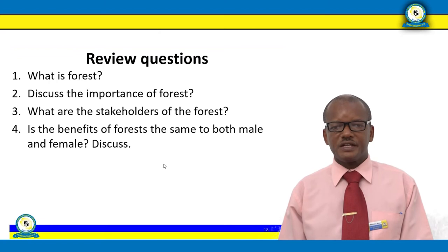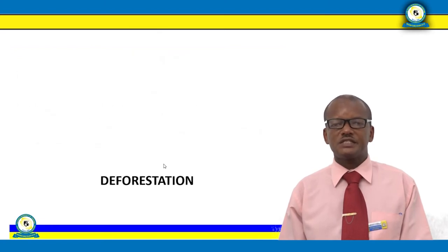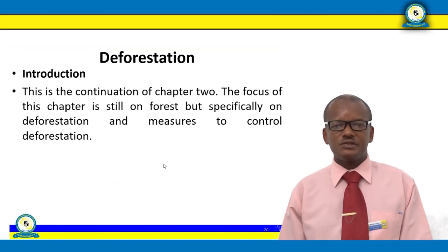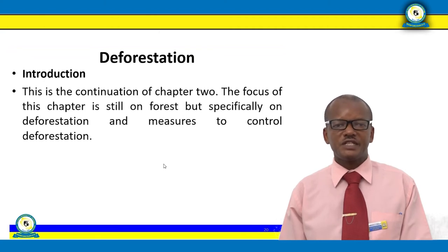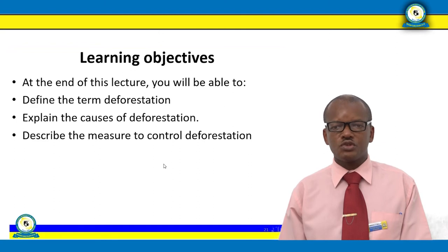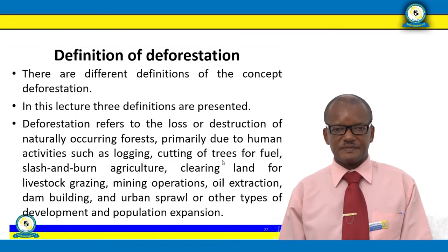Lecture 3 focuses on deforestation. Note that this is Lecture 3 in Knowledge Area 2, and it is the continuation of the chapter. The focus of this lecture is specifically on deforestation and the measures to control it. Learning objectives: at the end of this lecture you will be able to define the term deforestation, explain the causes of deforestation, and describe the measures to control deforestation.